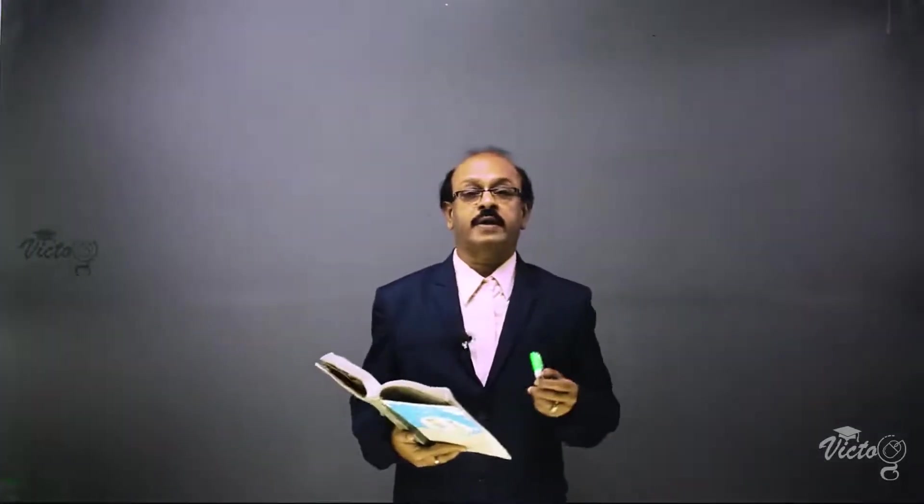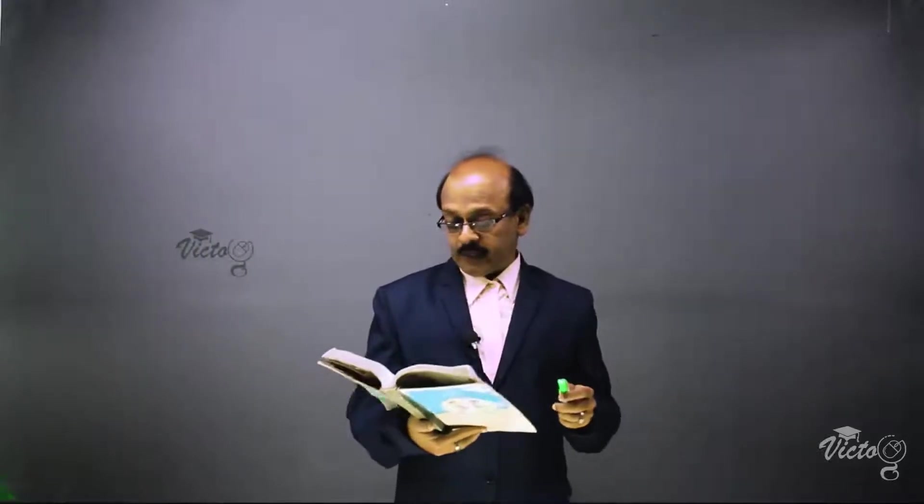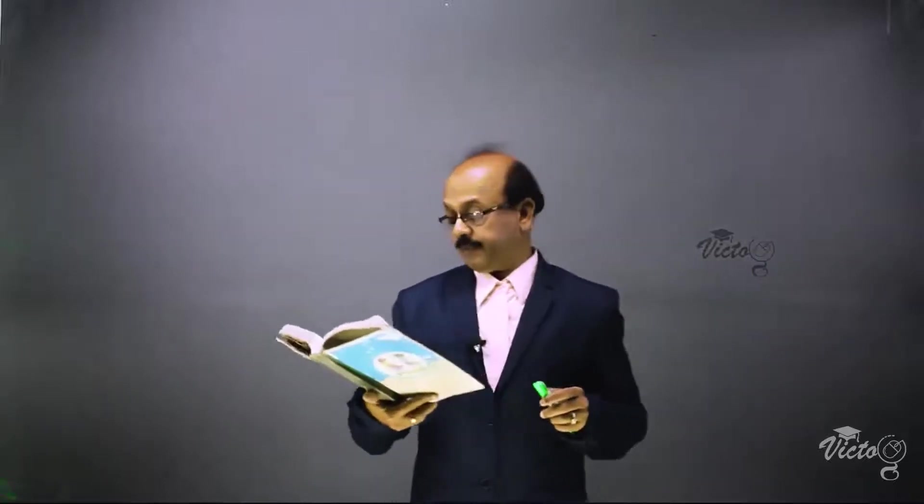The next question is based on a hemisphere. A hemispherical tank full of water is emptied by a pipe at the rate of 3 and 4 by 7 liters per second. How much time will it take to empty half the tank if it is 3 meters in diameter? There is a hemispherical tank which is full of water. We have to find out the time taken to empty half the volume of water in the tank by a pipe emptying water at the rate of 3 and 4 by 7 liters per second.